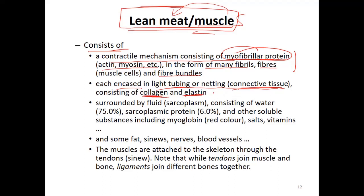And then inside the muscle we also have fluid. Seventy-five percent of muscle is water, so there's a lot of liquid inside. This fluid inside the muscle is called sarcoplasm. This fluid of course consists of a lot of water, but not only water - it consists of sarcoplasmic protein and other soluble substances. Myoglobin, for example, is a protein that is soluble. Salts, vitamins, also in the soluble form.